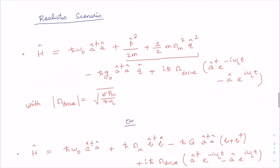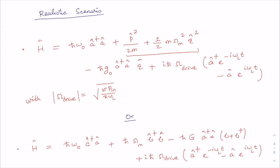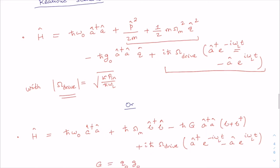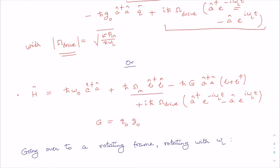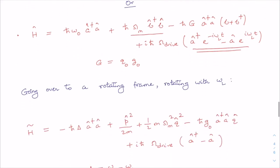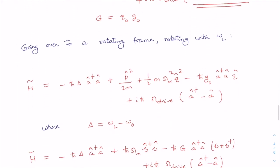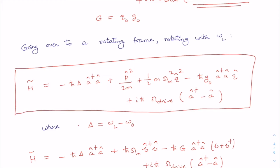Until now we considered the optical mode and mechanical mode only, but to get a realistic scenario we also need to consider the laser drive. The Fabry-Perot cavity is now externally driven by a laser with frequency ω_L and laser amplitude ω_drive. This Hamiltonian can also be written in terms of annihilation and creation operators of the mechanical oscillator. Since there is explicit time dependence, we go to a rotating frame of reference to eliminate it.